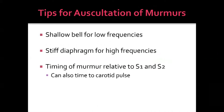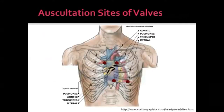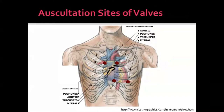Use a shallow bell for low frequencies and the diaphragm for higher frequencies. It's important to time the murmur relative to S1 and S2 to distinguish systolic from diastolic murmurs. You can also time it to the carotid pulse if S1 and S2 are unclear. The four main auscultation locations: mitral murmurs at the apex, aortic at the right upper sternal border, pulmonic at the left upper, and tricuspid along the left lateral sternal border.